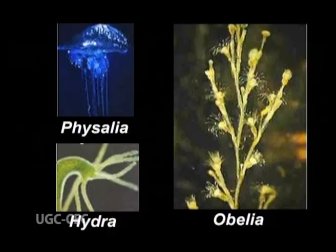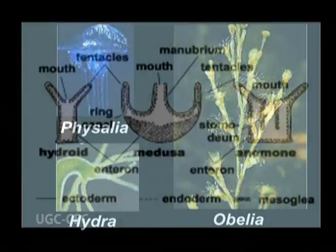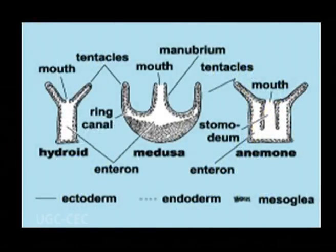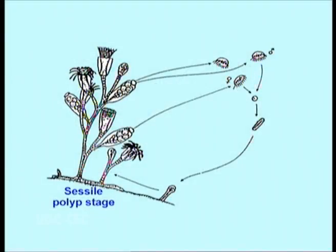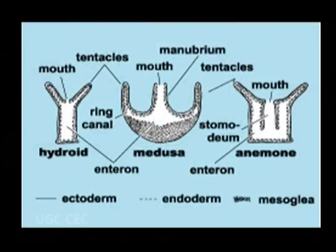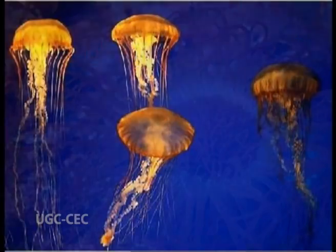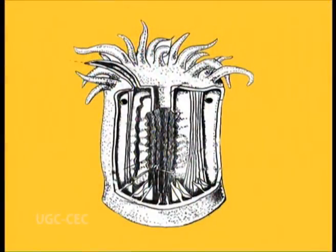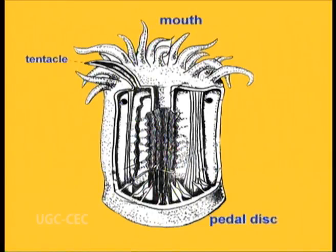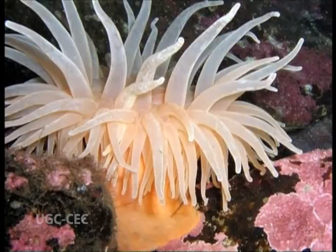Generally, hydrozoans which may be found as an individual or a colony exhibit dimorphism, that is two basic forms. First, a polyp that is usually sessile as a nutritive gastrozoid, and second, a medusa that is jelly-like with tentacles on the margin and with gonads — this is a free swimming form. Polyps have a tube-like body having a mouth at one end surrounded by tentacles and blind at the other end. They are sessile and attached by a pedal disc to the substratum, and hence lead a sedentary life.